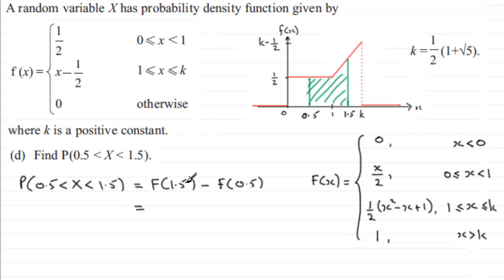And so we can just put 1.5 into this part here because X is between 1 and our k value. So we're going to have a half multiplied by 1.5 all squared minus 1.5 and then plus the 1.